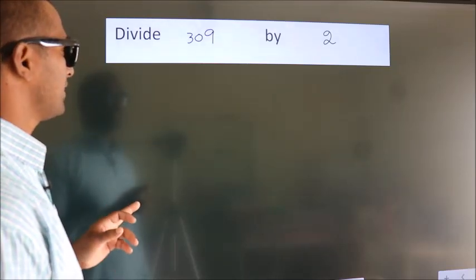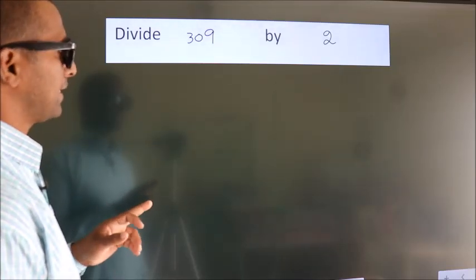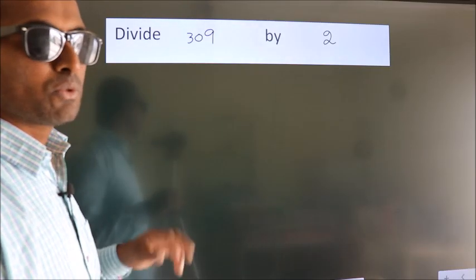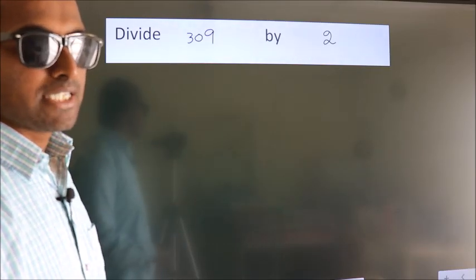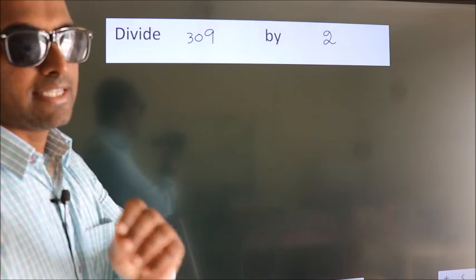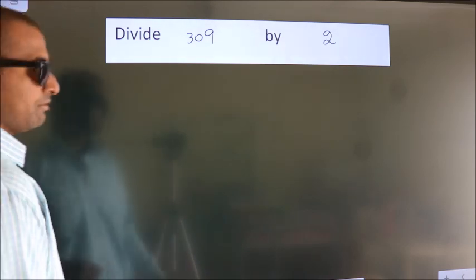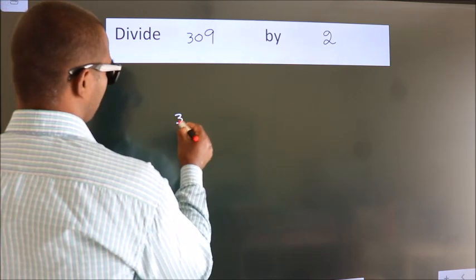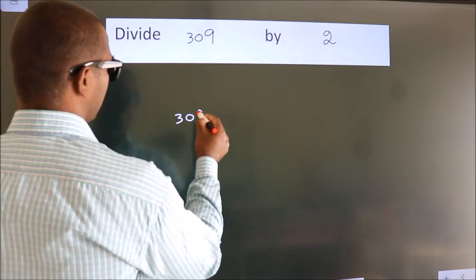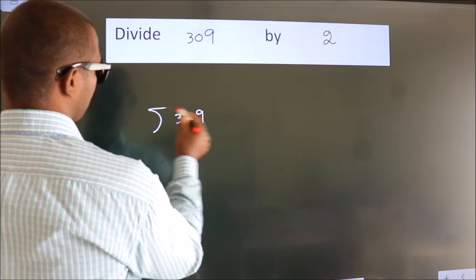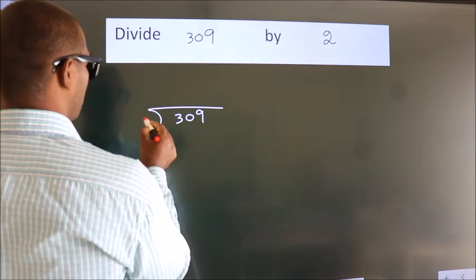Divide 309 by 2. To do this division, we should frame it in this way. 309 here, 2 here.